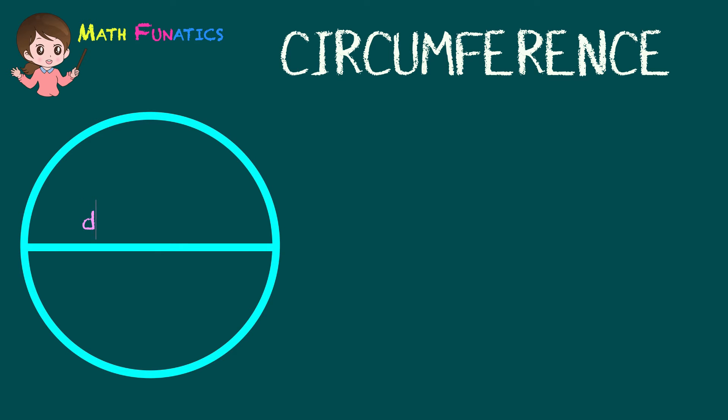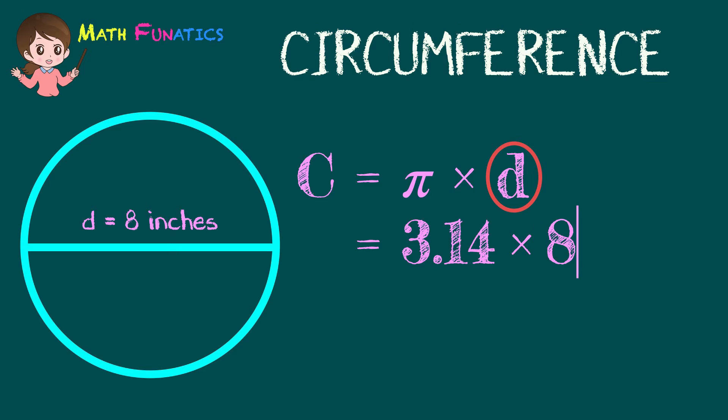What if the diameter of a circle is 8 inches? Again, let us use C equals pi times D. Replace the pi symbol by its value, which is 3.14. Next, replace D by its measurement, which is 8 inches.